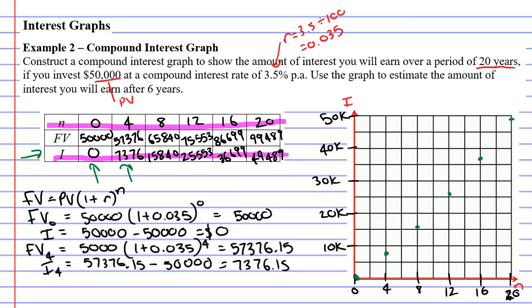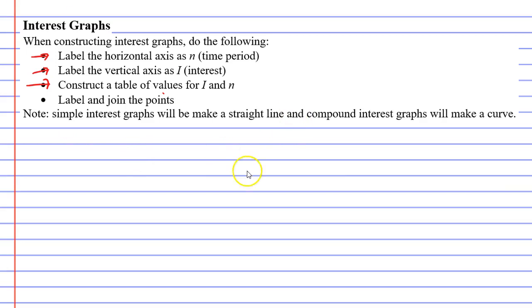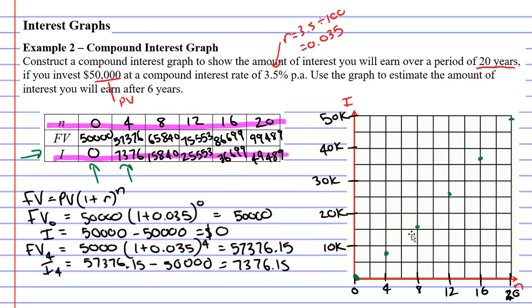Now when we join these up, I want to point out that compound interest graphs will make a curve. The one I've done has a very slight curve to it. Usually the curve will be a bit more obvious, but it hasn't in this one. We do not do straight lines for compound interest graphs. We want sort of a curve. For this particular curve, it's getting steeper and steeper as the years progress. If we had gone beyond the 20-year mark, the graph would have become steeper and steeper, creeping up and getting really steep.